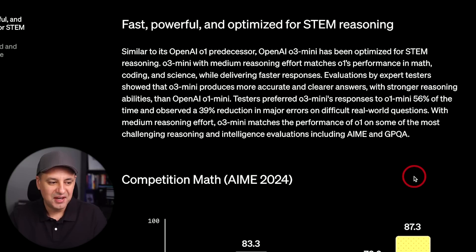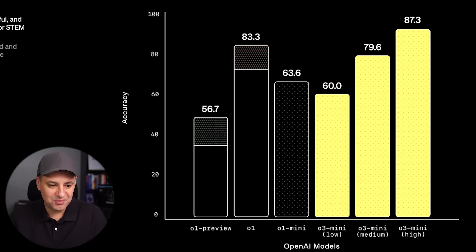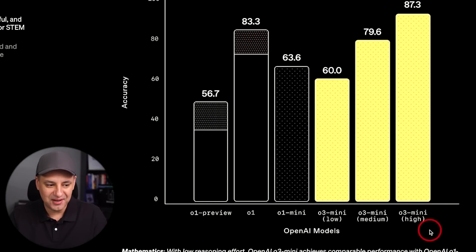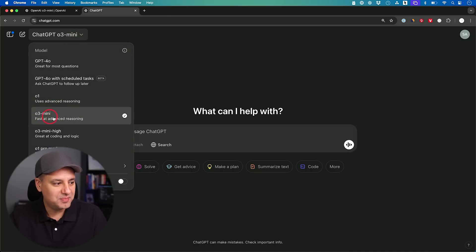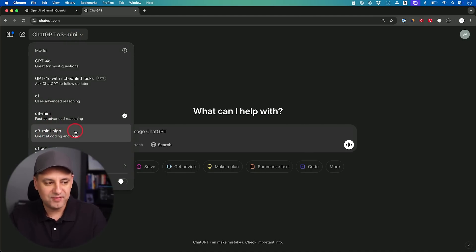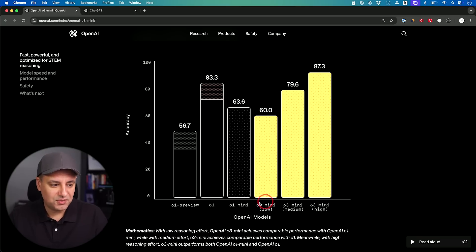They have these models based on the type of effort they put in: low reasoning effort, medium reasoning effort, and high reasoning effort. The naming is a bit strange — you've got O3 Mini, O3 Mini Low, O3 Mini Medium, O3 Mini High. In my pro account I have O3 Mini and O3 Mini High, which gives me unlimited access at $200 a month.